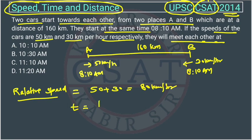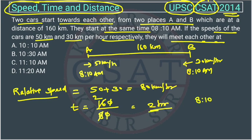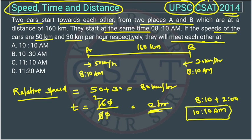The time taken will be distance divided by relative speed — that is 160 km divided by 80 km/h, which gives 2 hours. Since they started at 8:10, adding 2 hours gives 10:10 AM. So the answer is 10:10 AM.